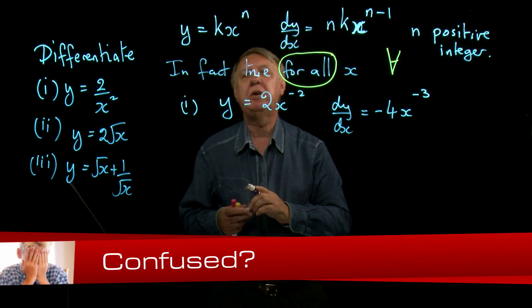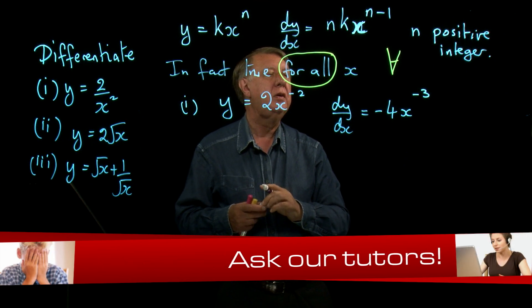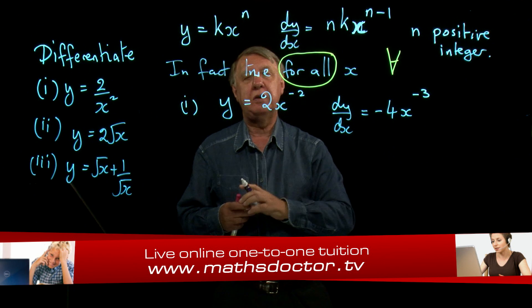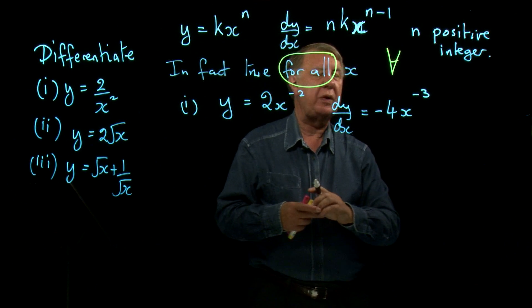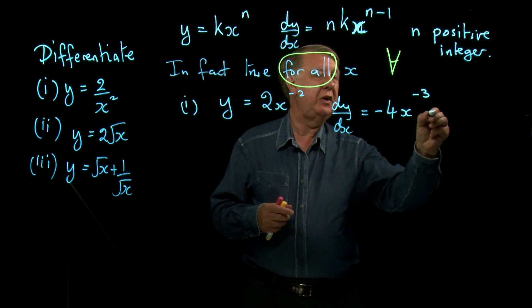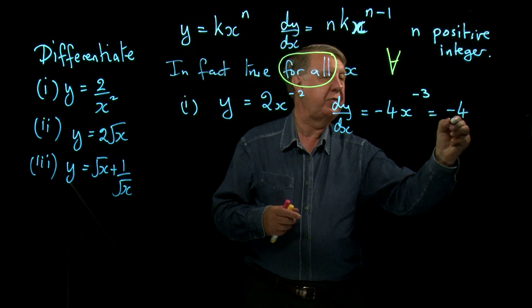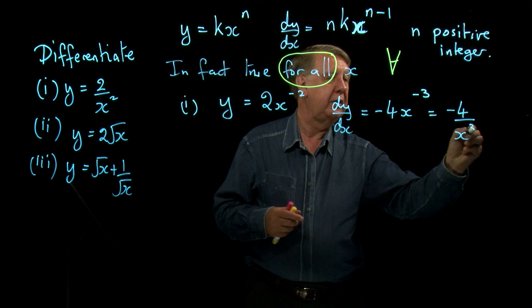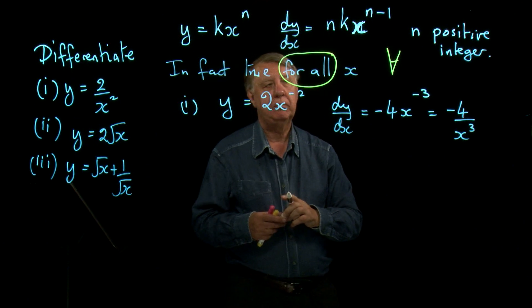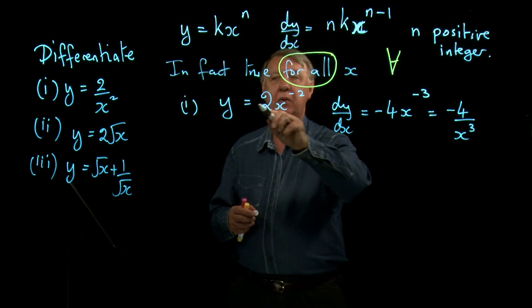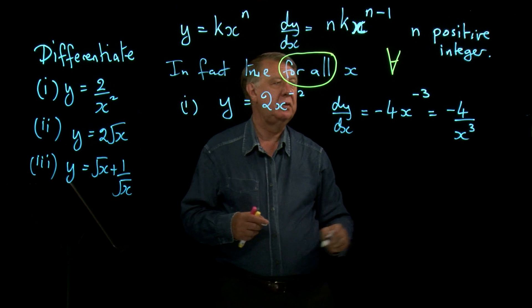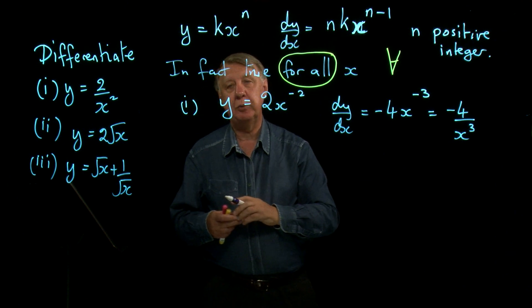Depending on how the question requires the answer written, that is the correct answer. But if it says without a negative power, then you would have to write that as negative 4 divided by x cubed. So there we have differentiated 2 over x squared to give us minus 4 over x cubed.